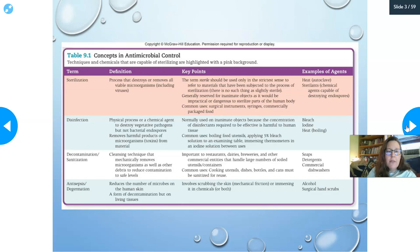Examples of agents that can achieve sterilization are heat via autoclave, and sterilants — chemicals capable of destroying endospores. Then we have disinfection: a physical process or chemical agent that destroys vegetative pathogens but not endospores. It removes harmful products of microorganisms, such as toxins. It's normally used on inanimate objects because the concentration required is harmful to human tissue. Common uses include bleach, iodine, and boiling heat.